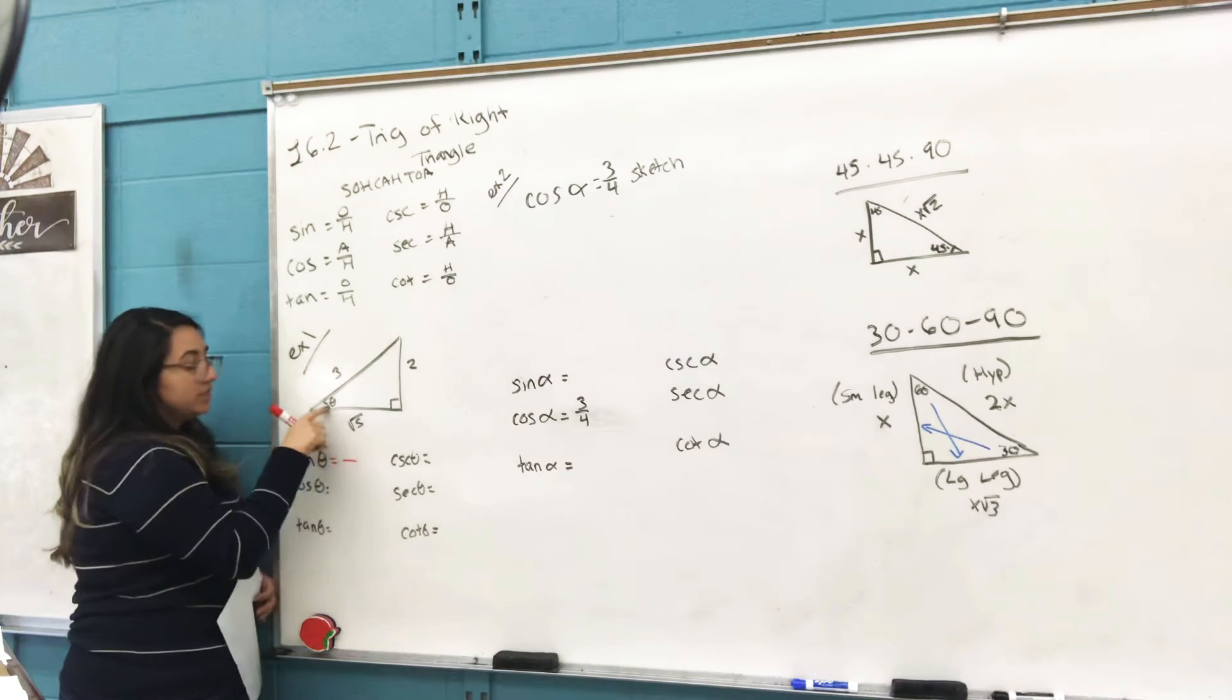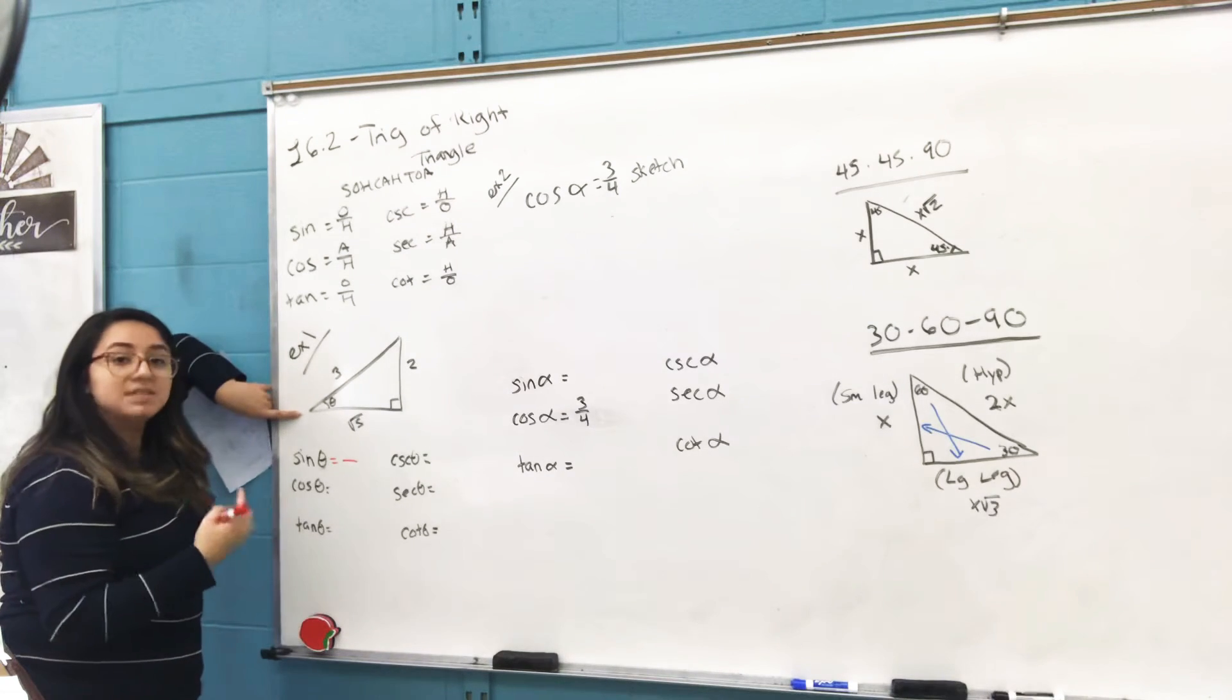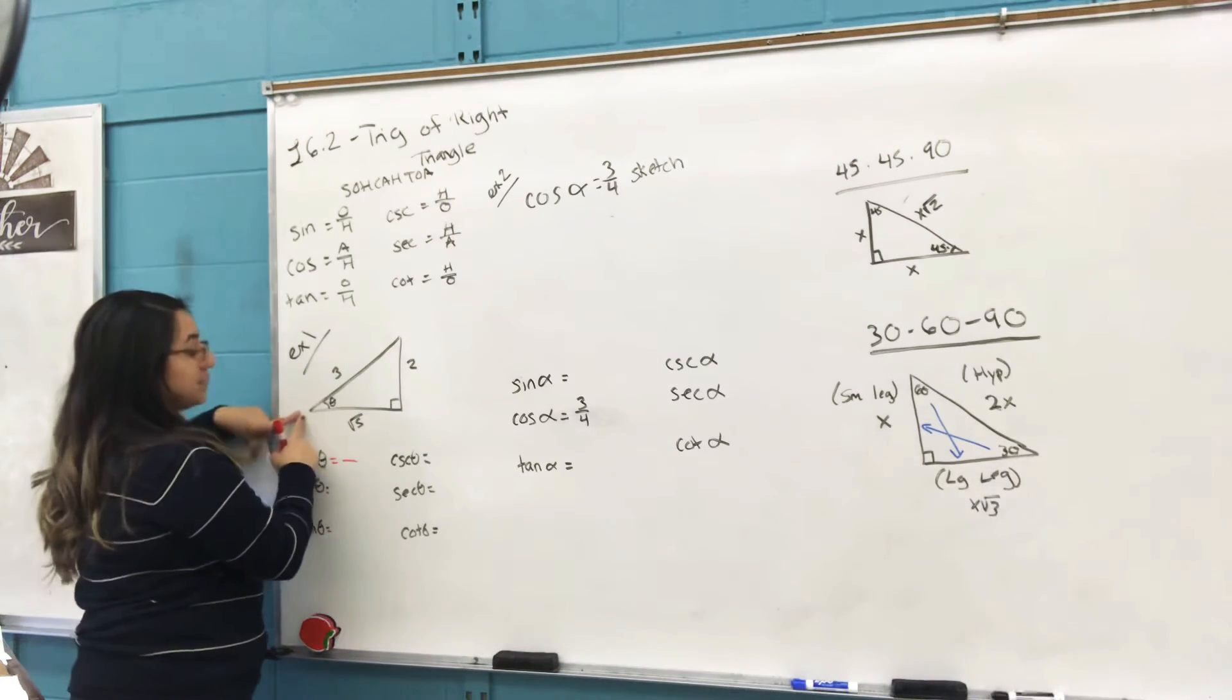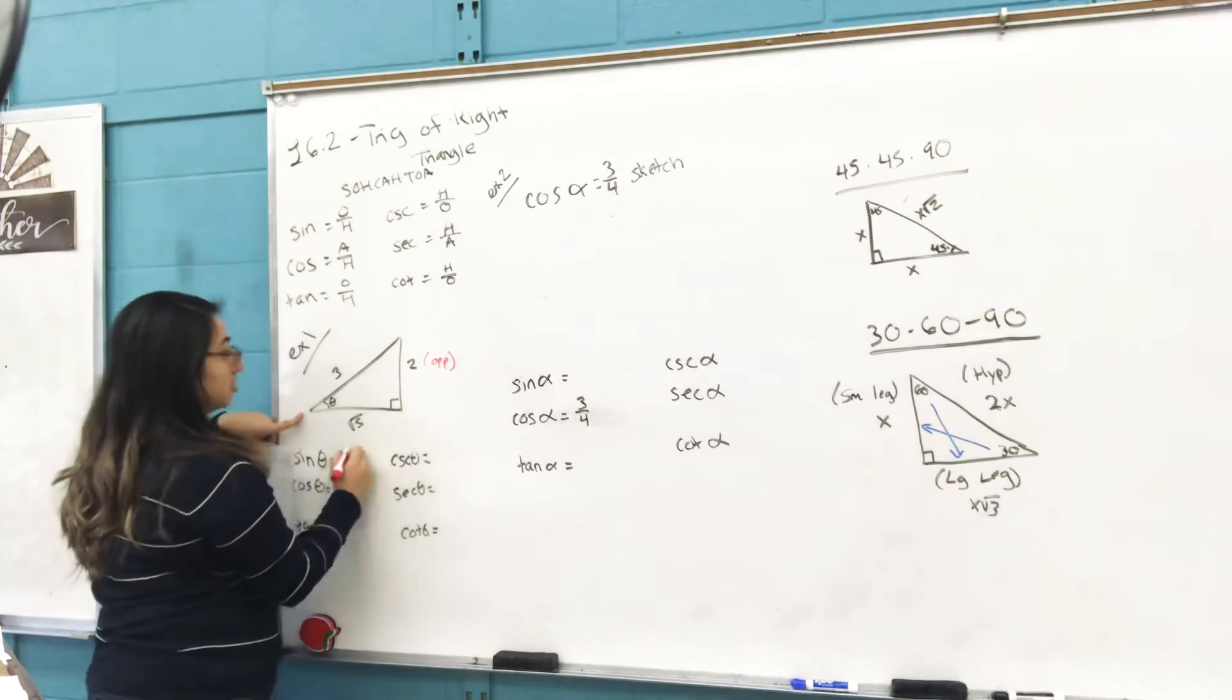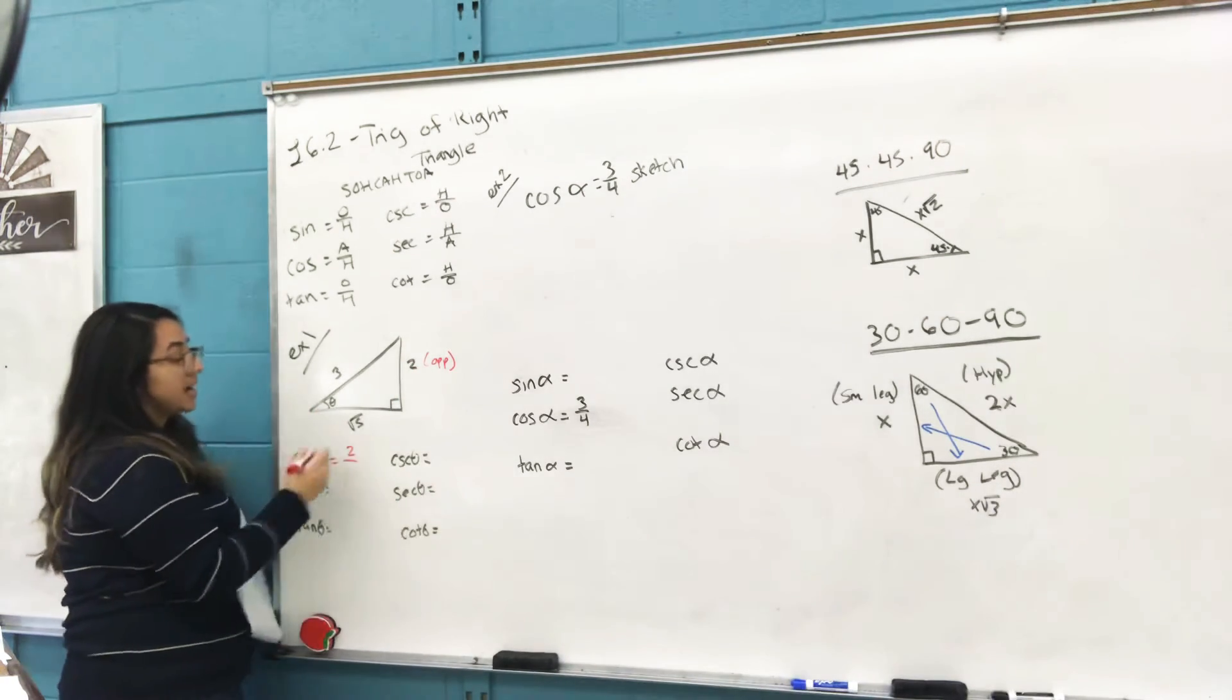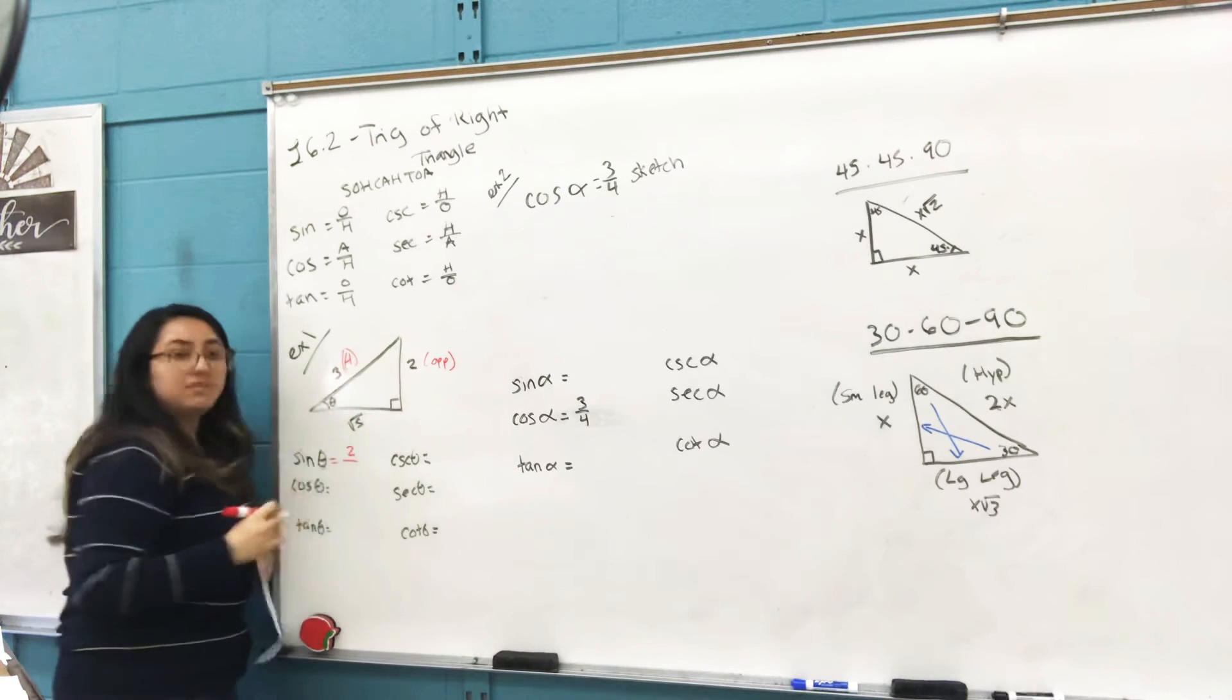Sine of theta: according to this, sine is considered opposite over hypotenuse. Opposite meaning the opposite side—the opposite side of theta is 2, and it's over hypotenuse.